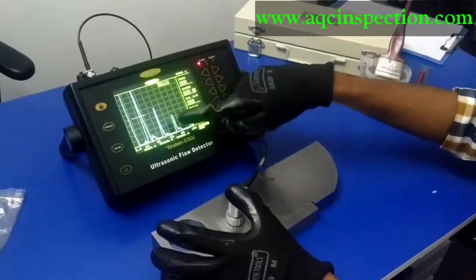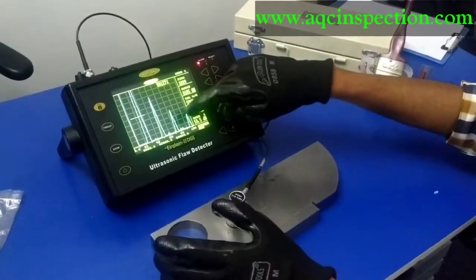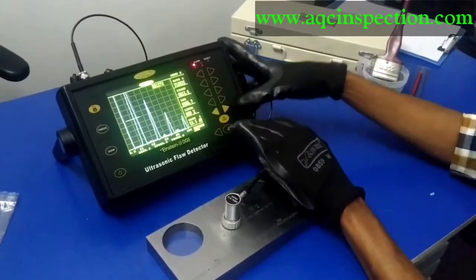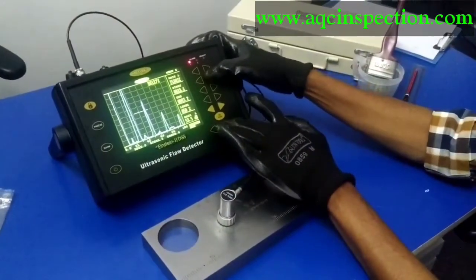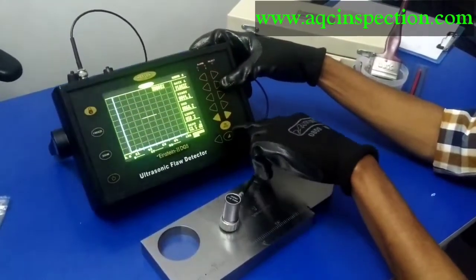Since we know the thickness of the V1 block as 25, I am going to set this as 25 mm. I am getting 24.3. So I will adjust a little bit more. 24.6, 25, 25.2. There will be a deviation which is mentioned as a tolerance in the standards. I am getting other three backwalls which is at 50 mm, 75 mm and 100 mm. You can check this using the gate, moving the gate to the second backwall. See the value is right here 50.